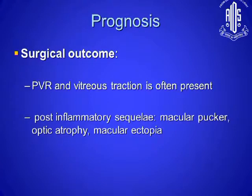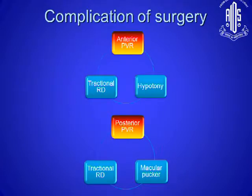The anatomical outcome is usually not very good — in ARN it is around 50%. The functional outcome is usually quite poor because of a lot of post-inflammatory sequelae such as macular factors, optic atrophy, and ectopia due to PVR. You also have these long-term PVR changes like tractional retinal detachment and chronic hypotony.